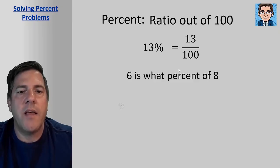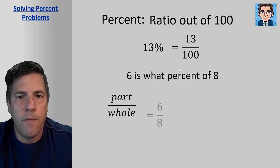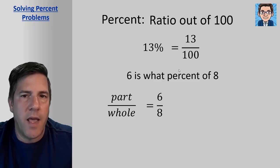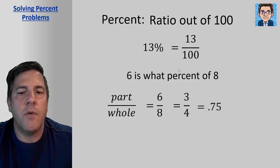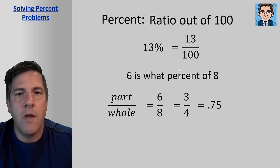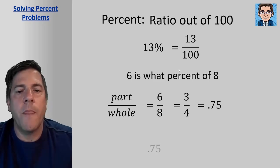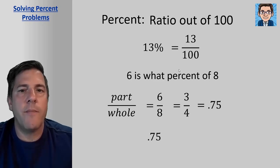We can take that ratio of part over a whole. So six divided by eight. If we reduce that fraction and change it to a decimal, we get 0.75. So then as a percent, 0.75 as a percent, we've got to move the decimal point over two places to make it a percent.